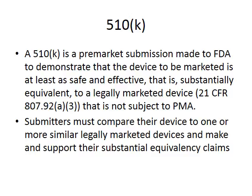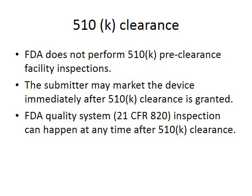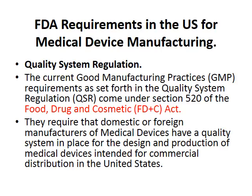You submit this file to the FDA and can receive a 510k clearance, which allows you to market your product. The Code of Federal Regulations is the document where all regulatory responsibilities are laid out. Submitters must compare their device to one or more legally marketed devices and support their substantial equivalency claims. The FDA does not perform a pre-clearance audit — it's up to the manufacturer to prove equivalency — however, the FDA can inspect at any time after clearance is granted. If a product is exempt, any limitations will be outlined in 21 CFR.